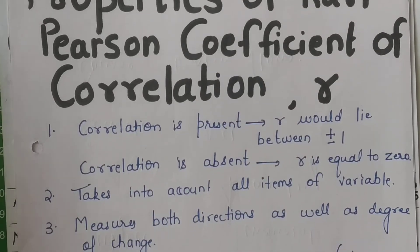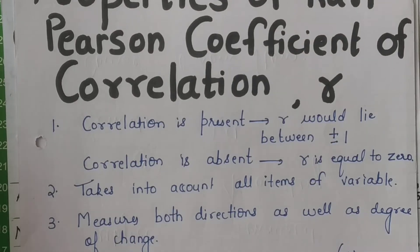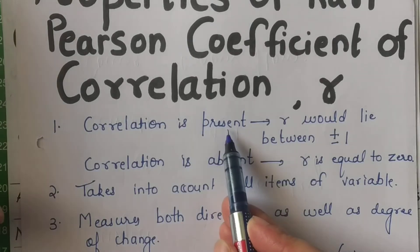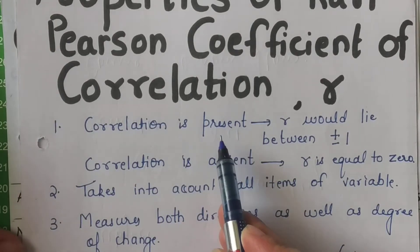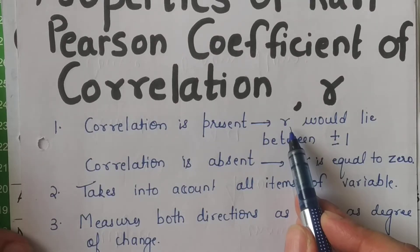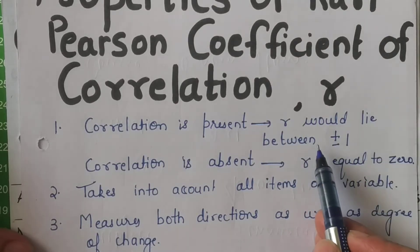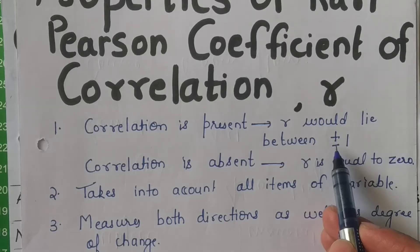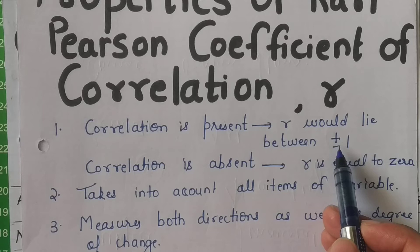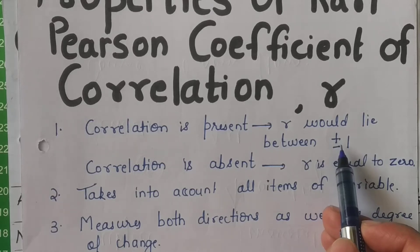The very first property that I already explained in the introduction video: when the correlation is there between the two variables, when correlation exists, then the value of r, which is the coefficient of correlation, would lie between minus 1 to plus 1. It can be any value starting from minus 1, it can be 0, it can be till 1.